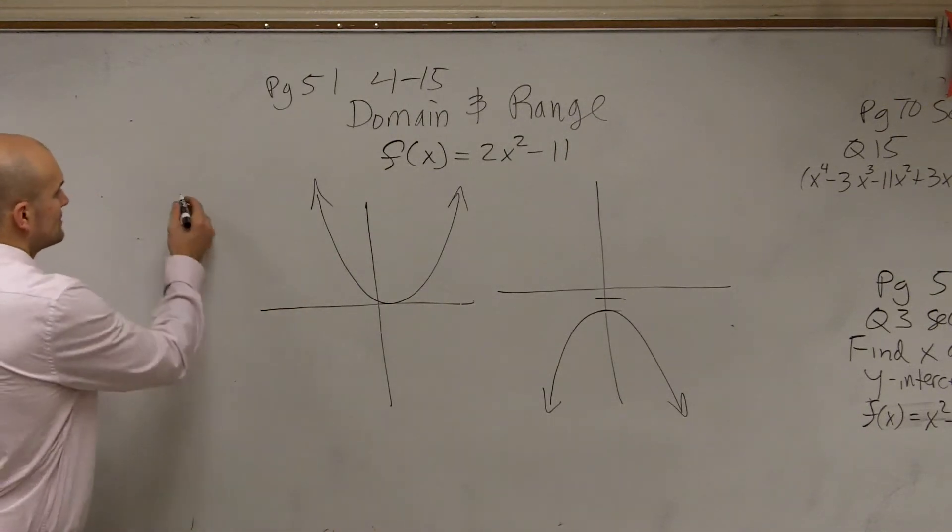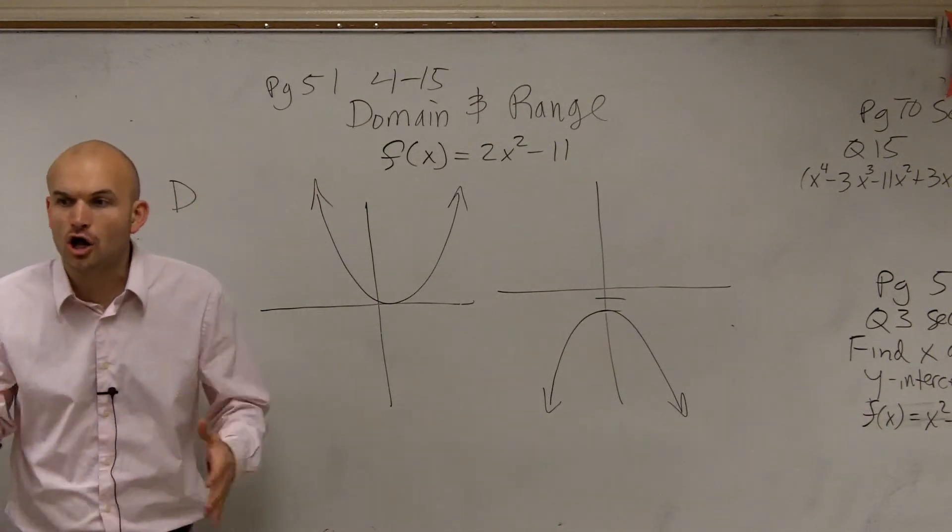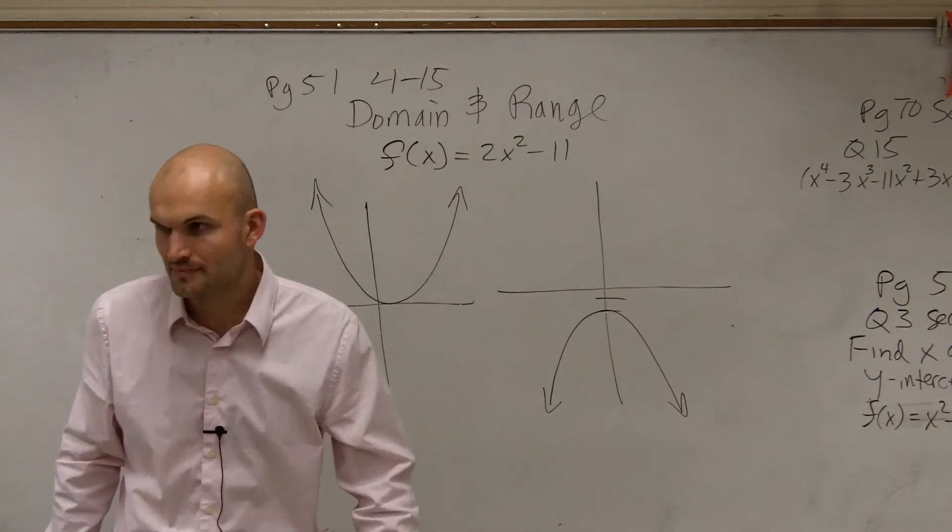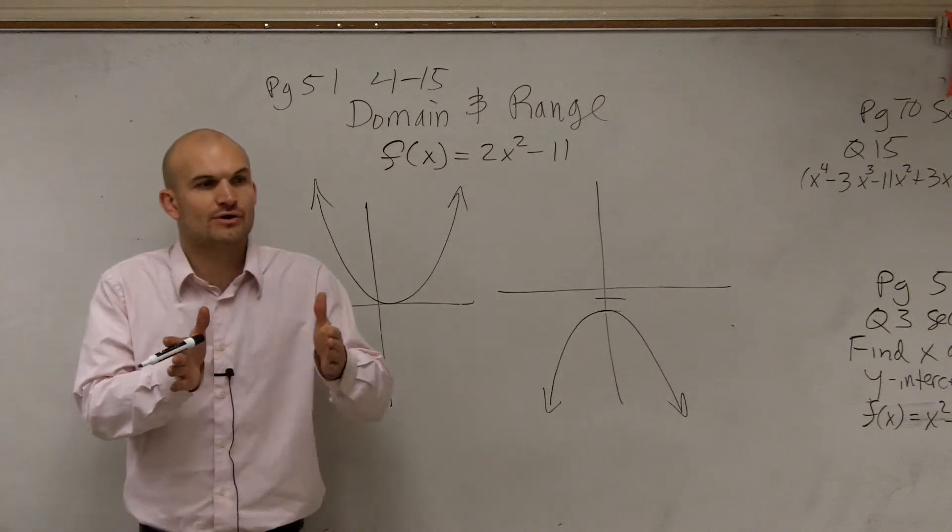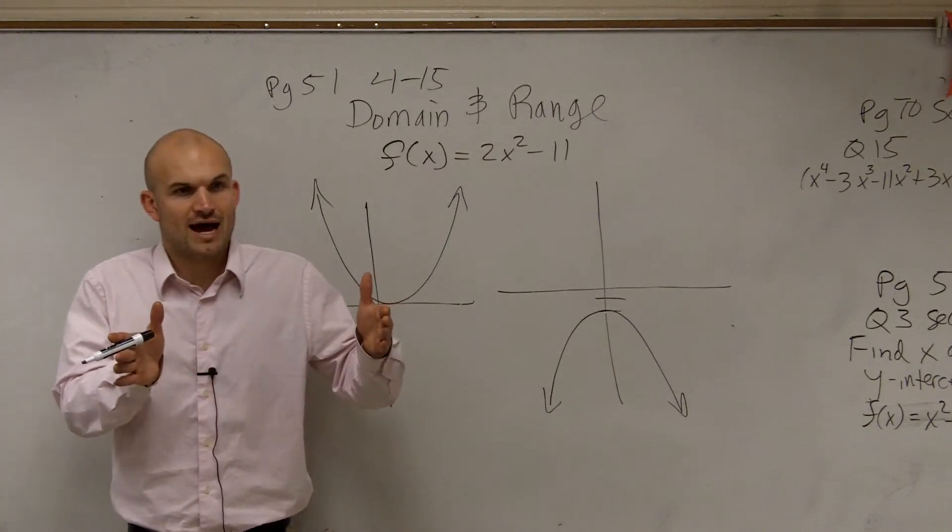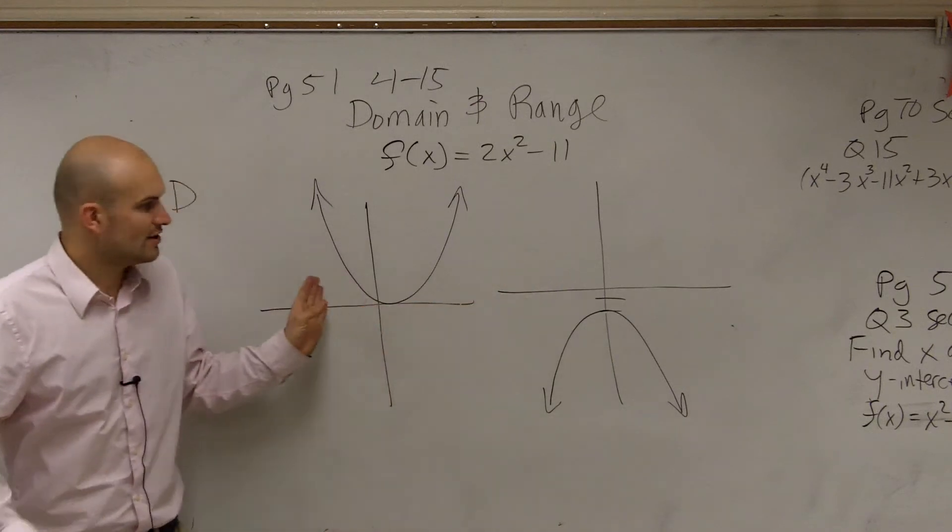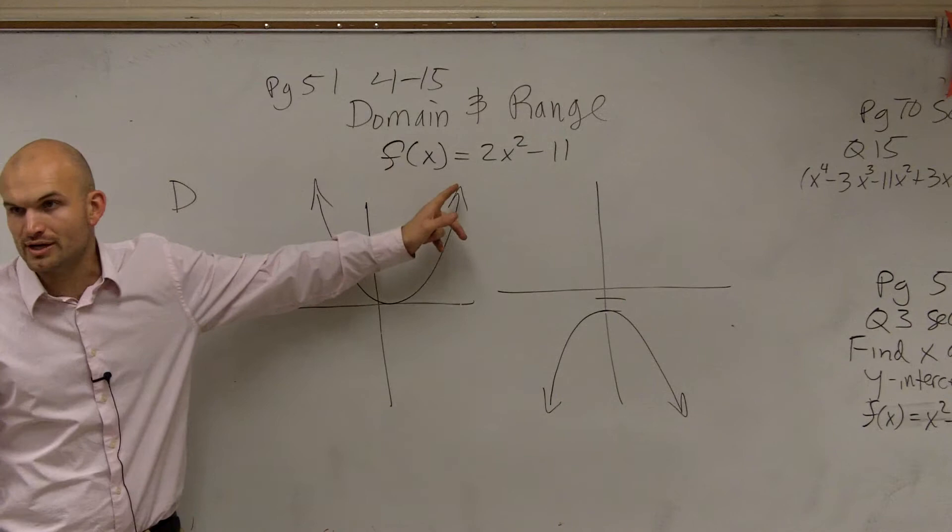Remember, the domain is the set of all x values that can be evaluated for your function. So the way to look at this, as this graph, as we keep on going left and right, this graph is going to keep on expanding wider and wider. Is there an x value? For every x value, is there going to be a y coordinate of this function? Yes.